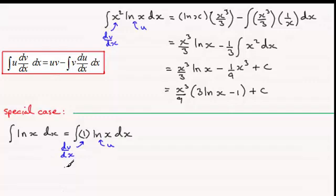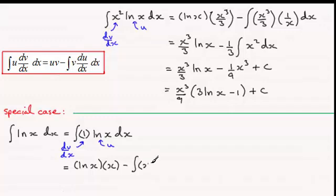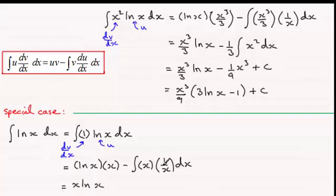So what did you get? Well, according to the formula, we would put down natural log of x for u, and then multiply it by the integral of dv by dx, which would be v. So integrating the 1 with respect to x just gives us x. Then it's minus the integral of v, which is now the x, multiplied by the differential of natural log of x, so that's going to be 1 over x. These x's cancel, so you've just got minus the integral of 1 with respect to x.